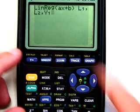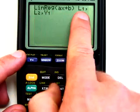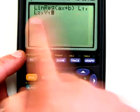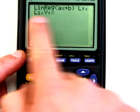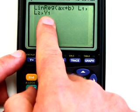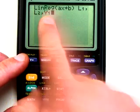So now it goes back to the home screen here. linreg, l1, l2, that's my x variable, my y variable, and then I want it to put it into the graphing editor under y1.